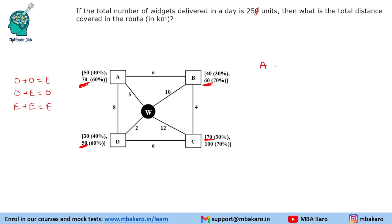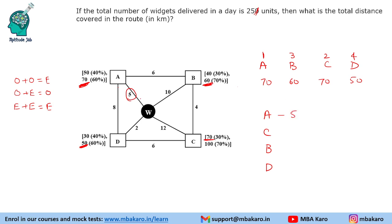Now we know A=70, B=60, C=70, D=50. The first person should visit A or C — both have demand 70. A is closer at just 5 kilometers, so A will be the first place visited. The order is A, C, B, D. Going to A requires 5 km from warehouse. A to C — since there's no direct diagonal path, it's 5 plus 12 = 17 km including the warehouse leg. Then C to B is 4 km, and B to D requires the warehouse route for 12 km. Total: 5 + 17 + 4 + 12 = 38 kilometers.